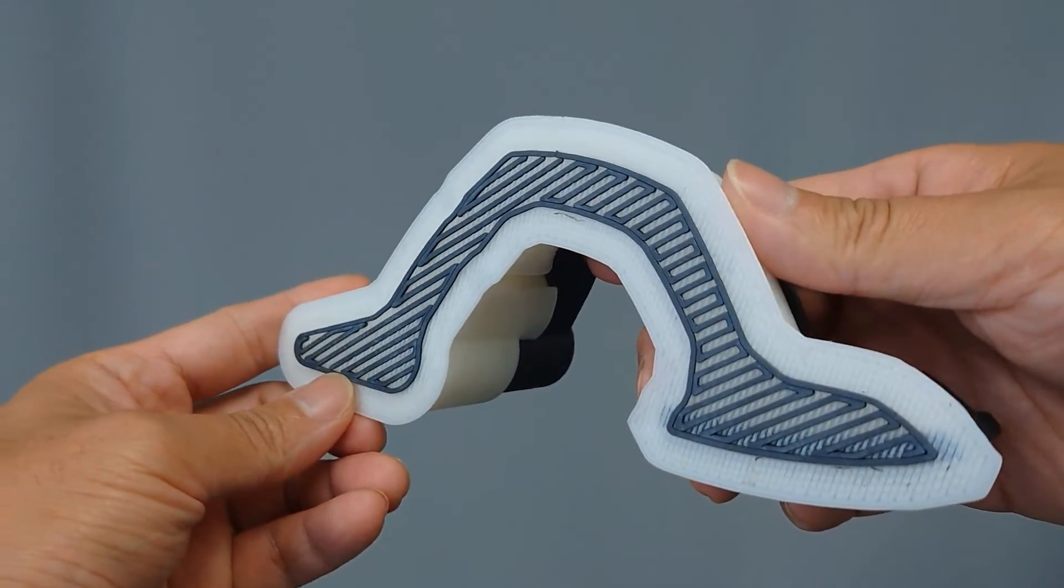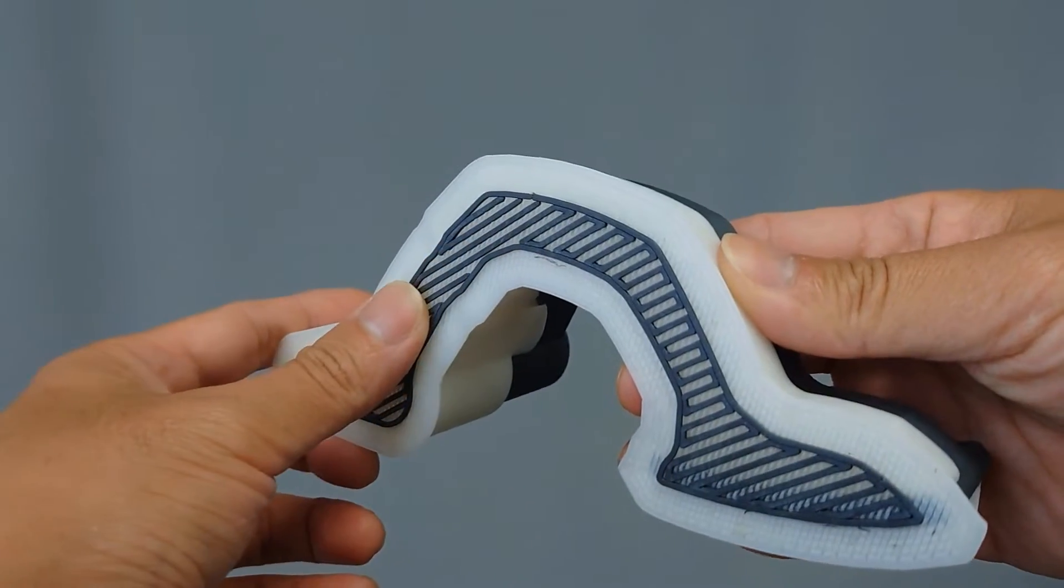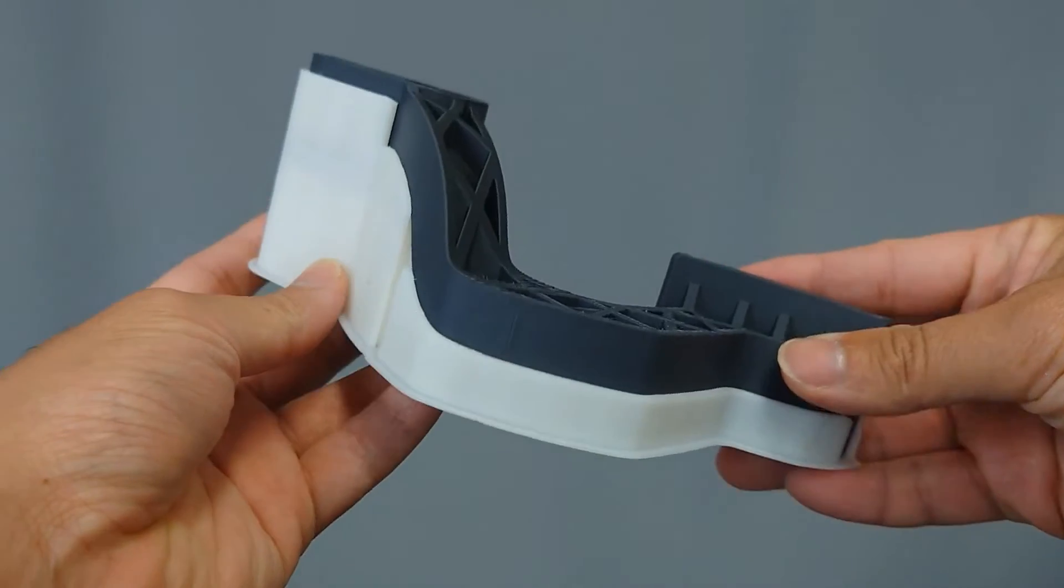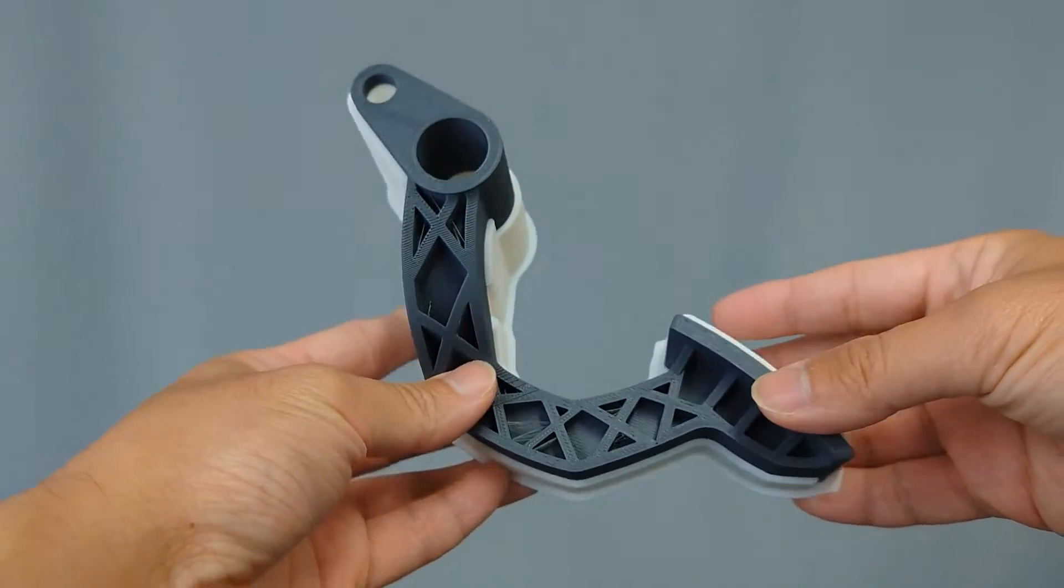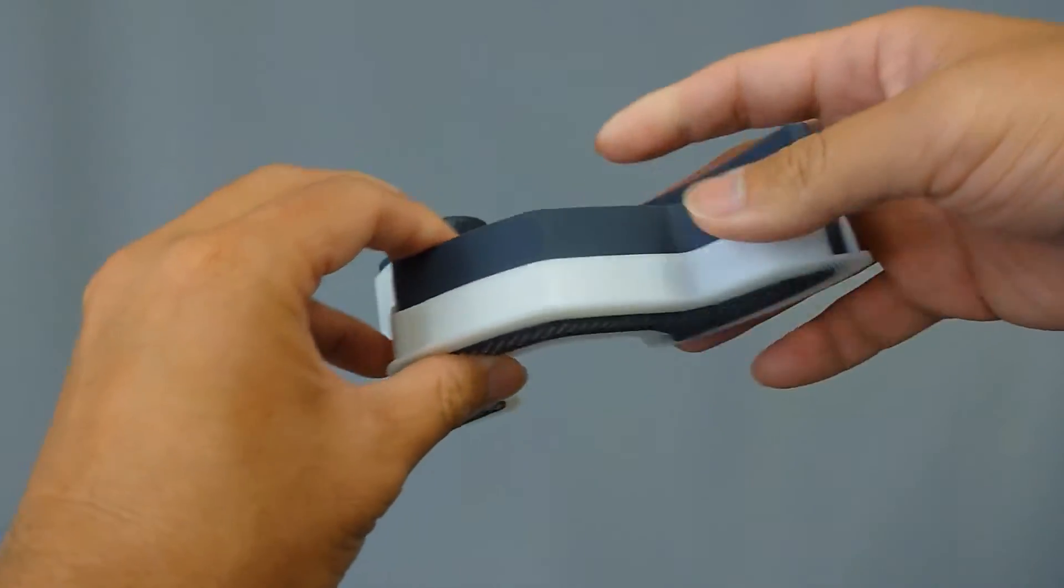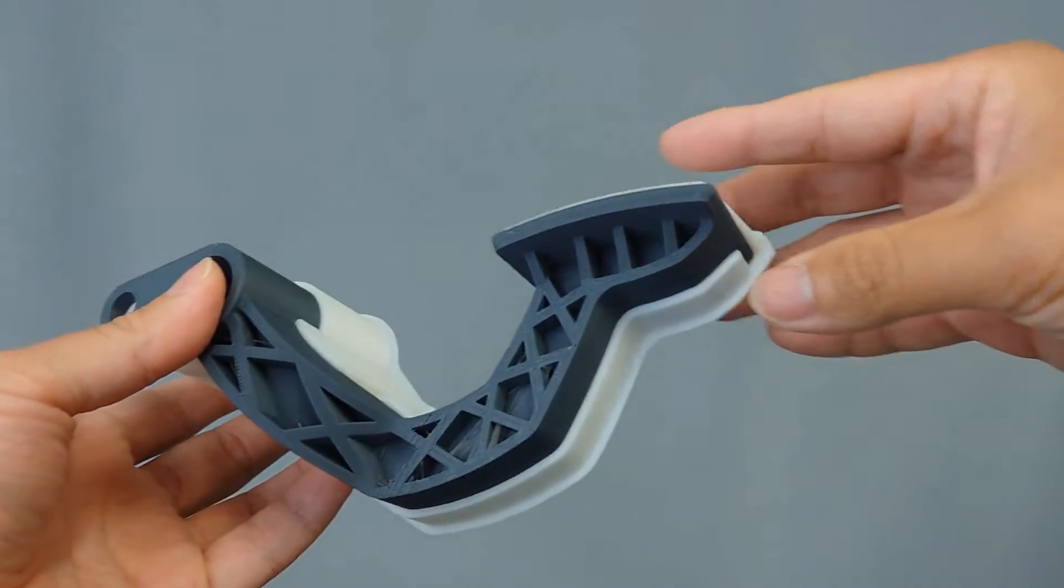A raft is a fully removable, stabilizing base that is meant to be removed from the model after printing is completed. If you are using the default settings, the raft will comprise a first layer made of model material, but will predominantly be made of support material.